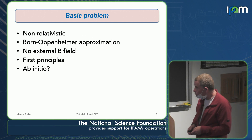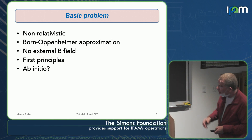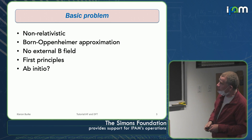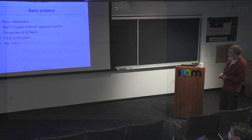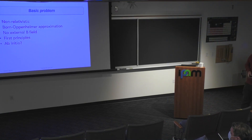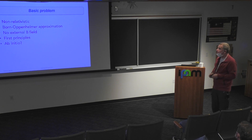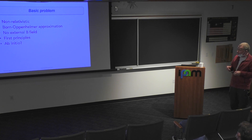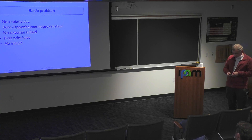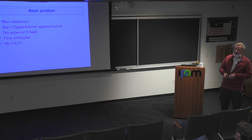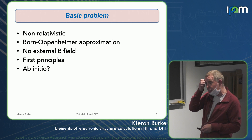A basic problem is electronic structure, and I'm going to limit myself to the non-relativistic case, make the Born-Oppenheimer approximation. I won't have external magnetic fields, and we'll use the term 'first principles,' meaning that we take the Hamiltonian and try to solve it directly — we don't use model Hamiltonians. Another term people use is 'ab initio,' which we should try to avoid because it means different things to different people.